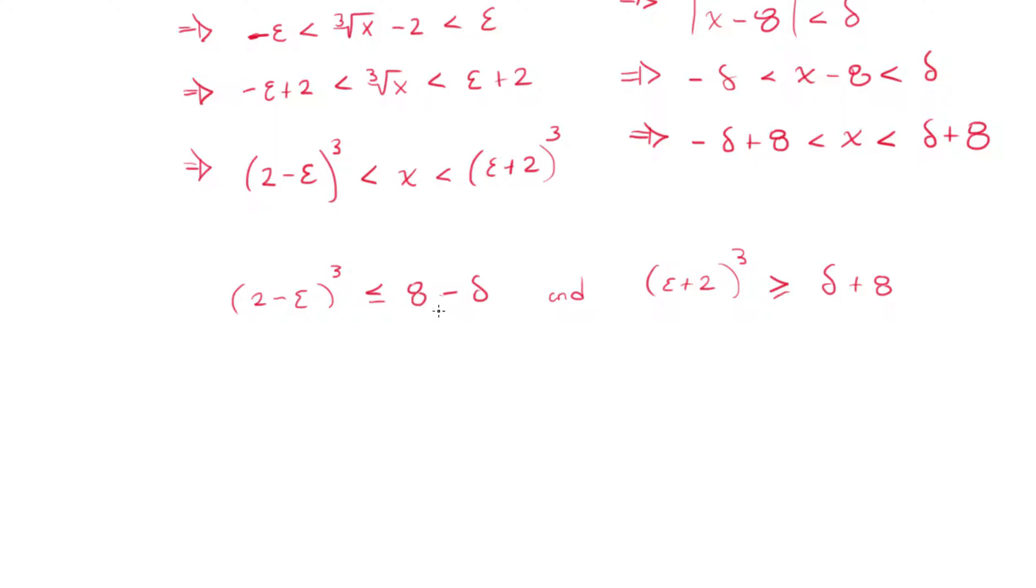Now, notice that this is minus delta, so I'm going to move the delta to the left and I'm going to move this term to the right. I'm going to have delta less than or equal to 8 minus 2 minus epsilon cubed, and then I'm going to have epsilon plus 2 cubed minus 8 greater or equal than delta.